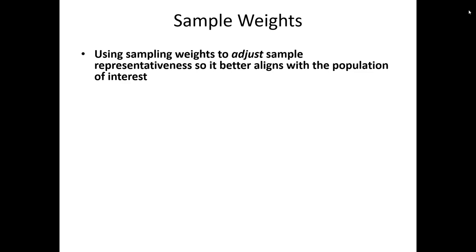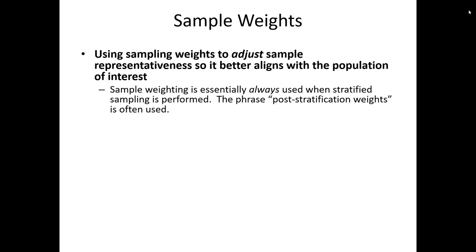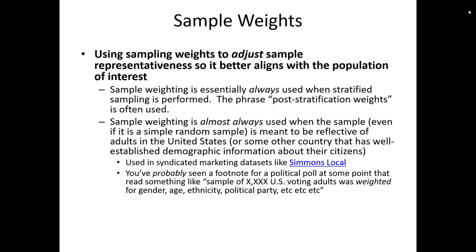So just what is the idea of sample weights? Sample weights are used to adjust the representativeness of a sample so that it better aligns with a population of interest. Sample weighting is essentially always used when stratified sampling is performed — the phrase 'post-stratification weights' is often used to describe this. Sample weighting is also almost always used when the sample, even from a simple random sample, is meant to be reflective of adults in the United States or some other country with well-established demographic information. For example, the syndicated marketing dataset Simmons Local, illustrated through the Simply Analytics tool available at SDSU, uses sample weights because they're interested in projecting their results to the United States.